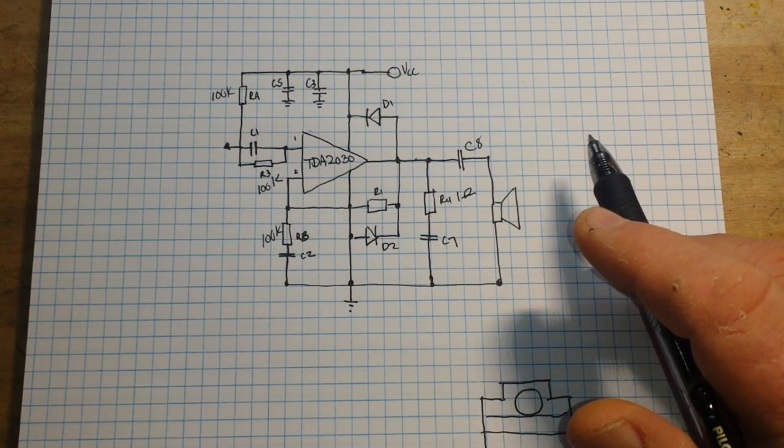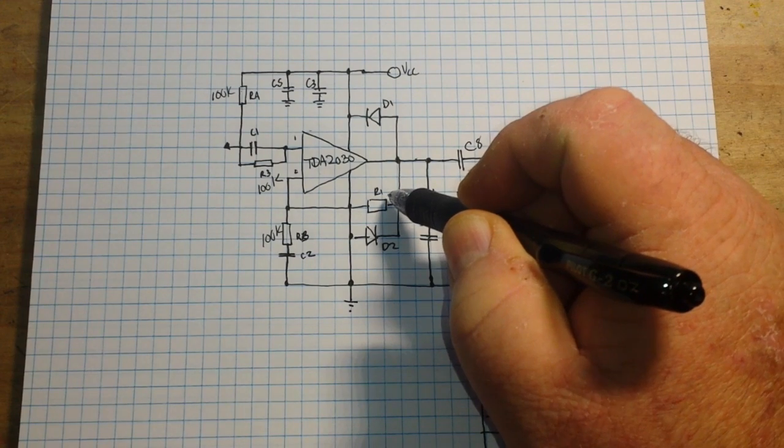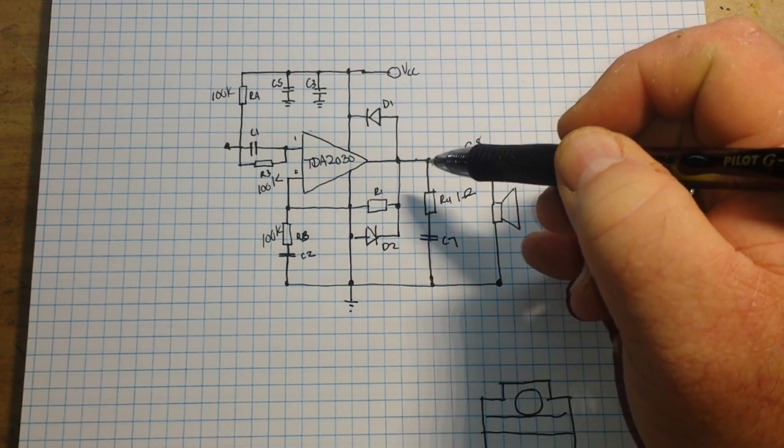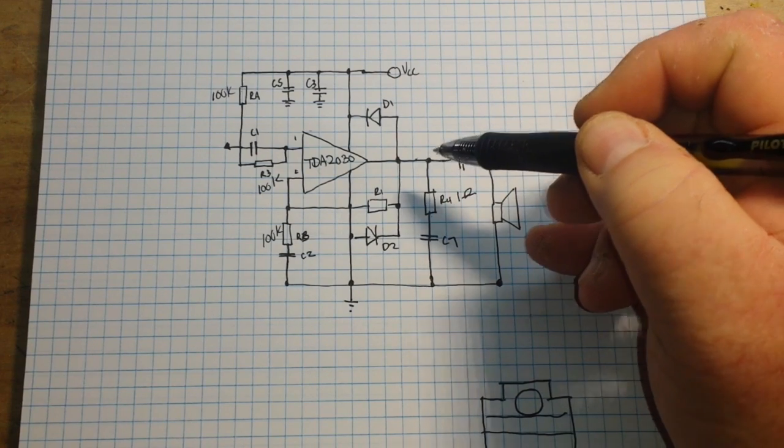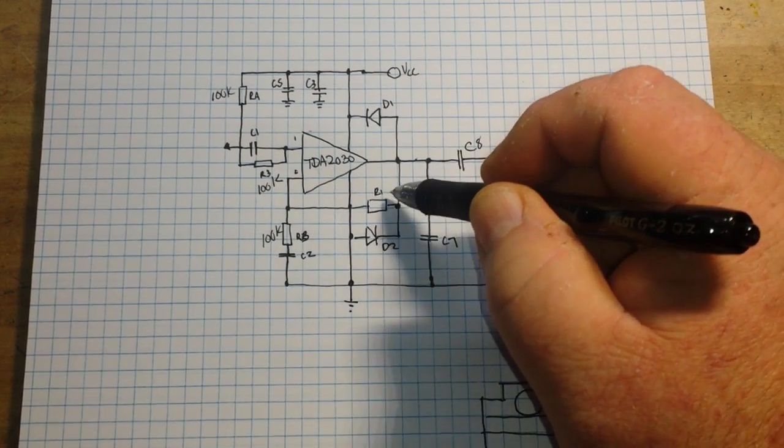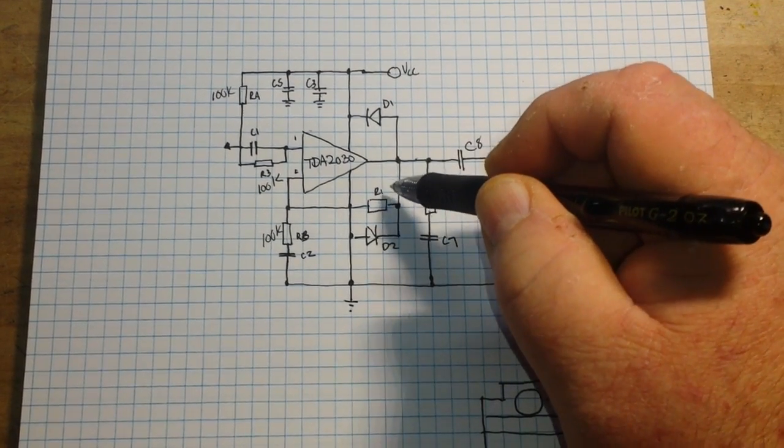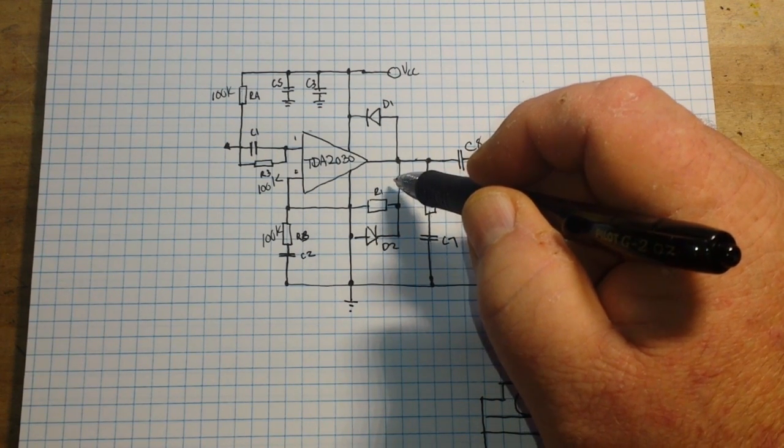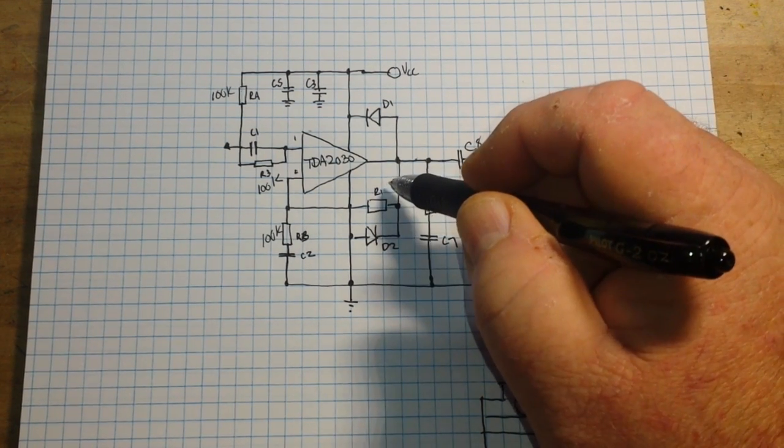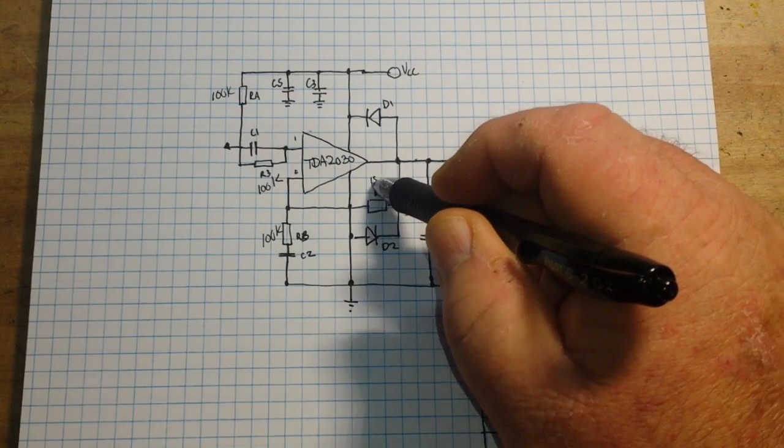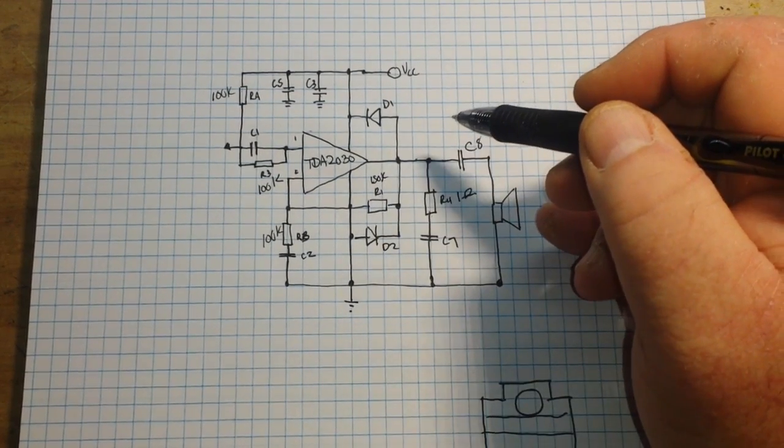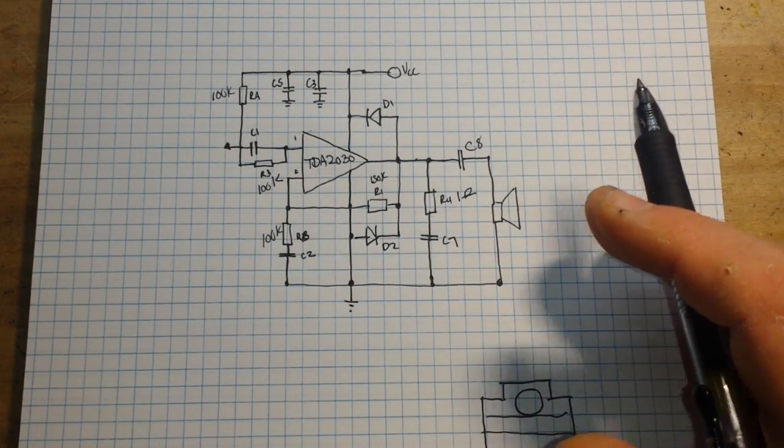Okay, next up we have R1, which is this guy right here, and R2... we didn't use R2, that's for the double supply. So R1 is our closed loop gain setting, and the value we're going to put here is 150k. If you increase it, you get an increase in gain. If you decrease it, you get a decrease in gain.